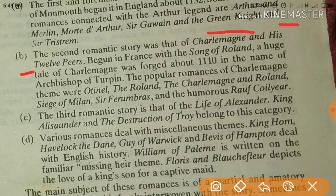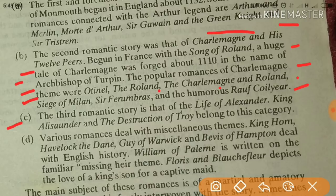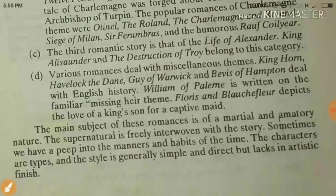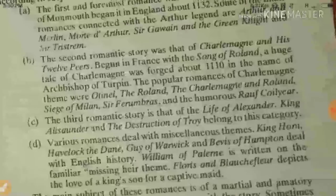The second romance subject was Charlemagne and his twelve peers, which began in France with the Song of Roland. A major tale of Charlemagne was composed around 1110. Popular romances on the Charlemagne theme include The Roland, The Charlemagne, Renard, The Siege of Melon, Sir Ferumbras, and the humorous Ralph Coilus. The third romance subject is Alexander the Great — King Alisaunder and the Destruction of Troy belong to this category.